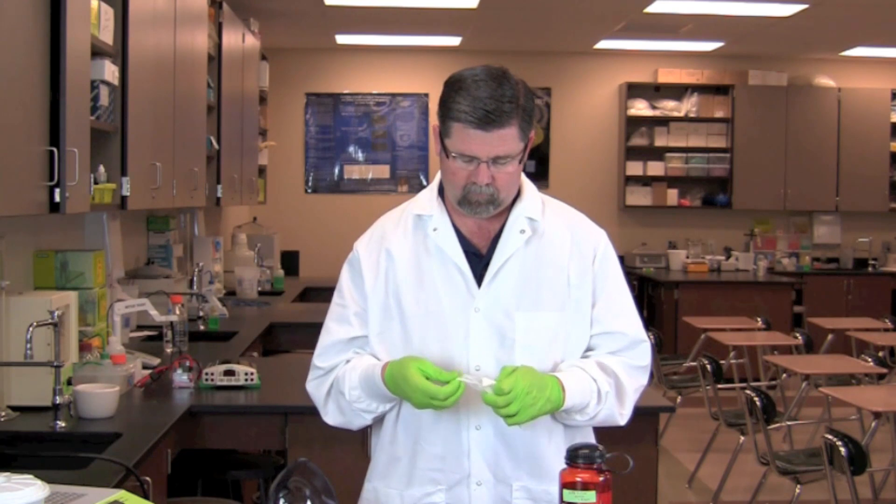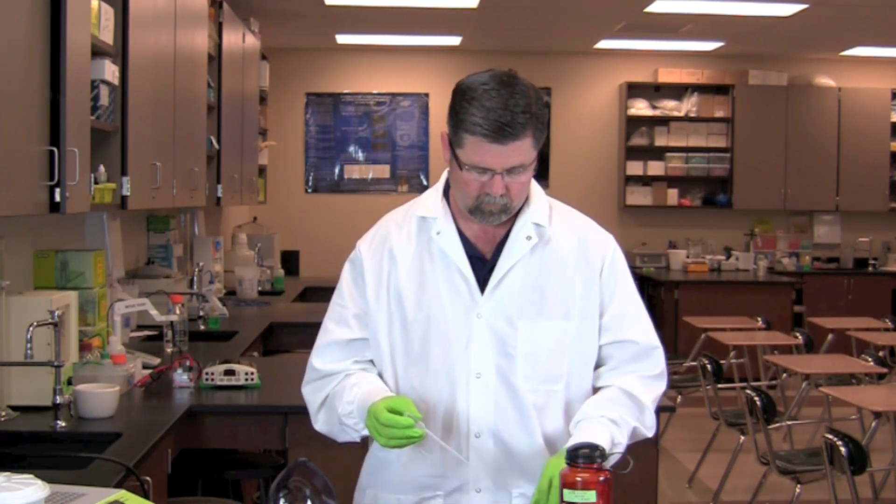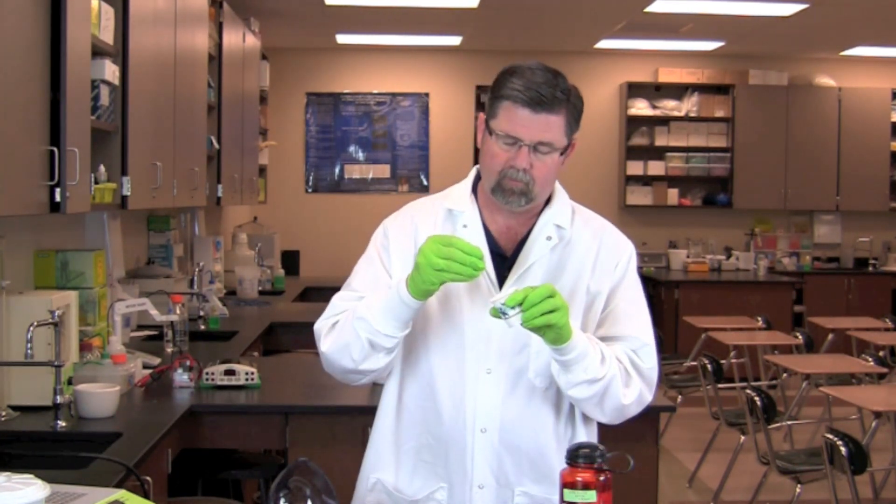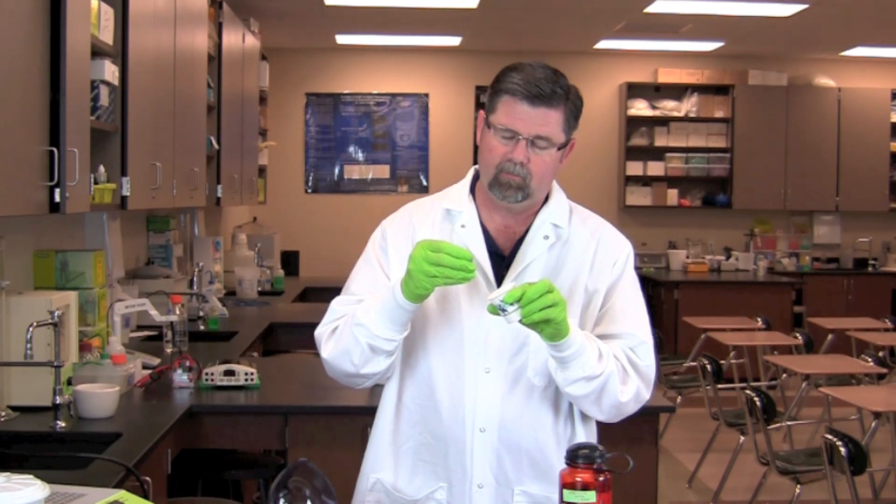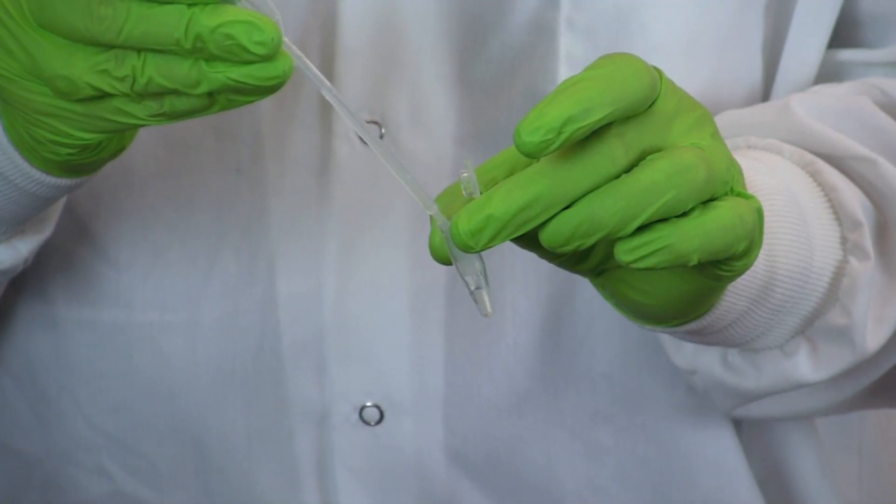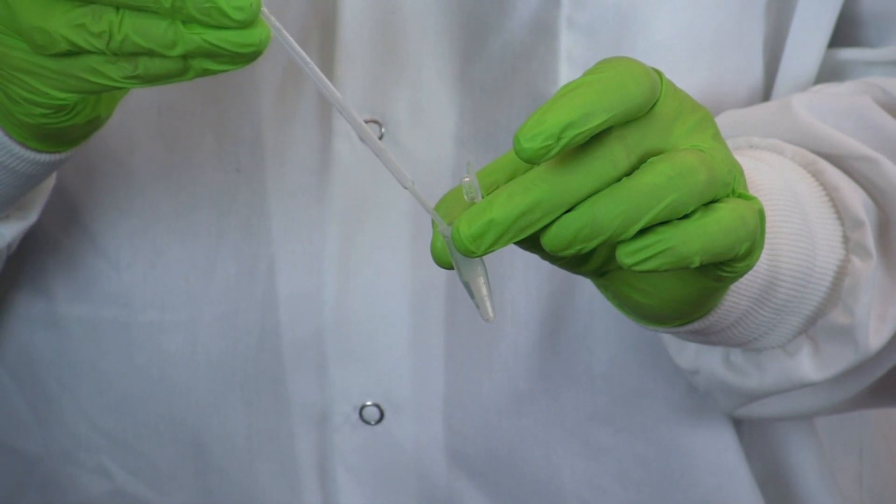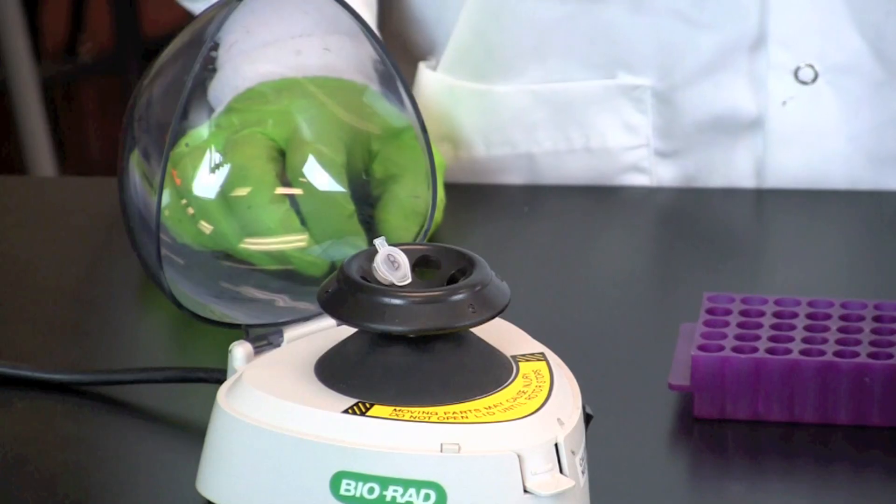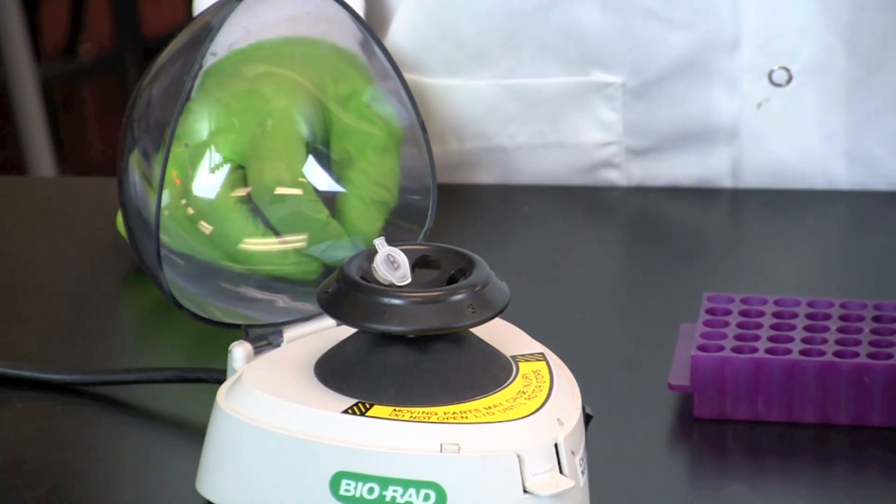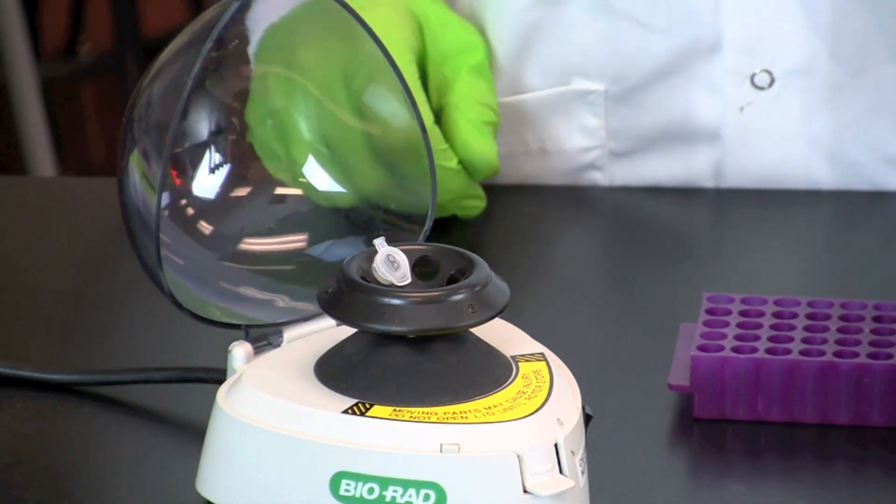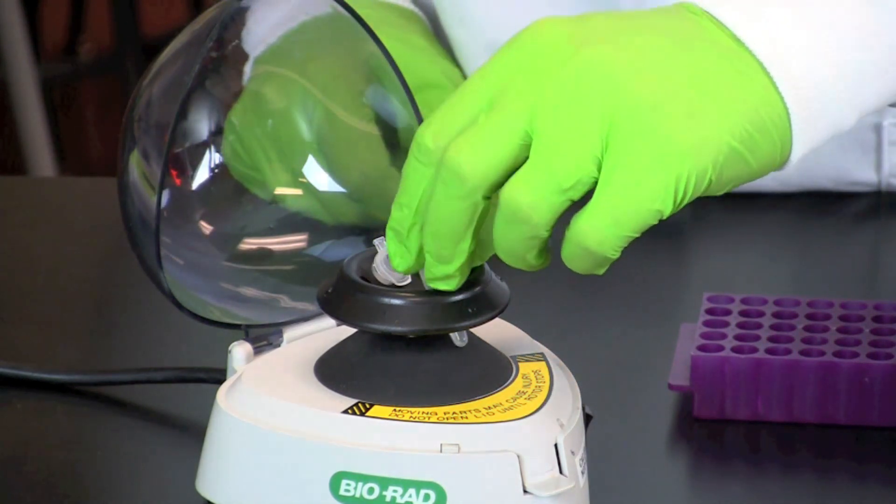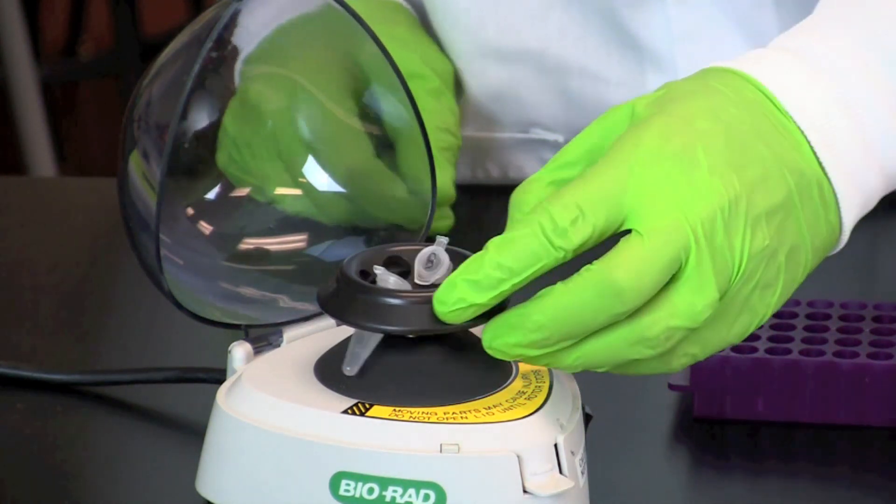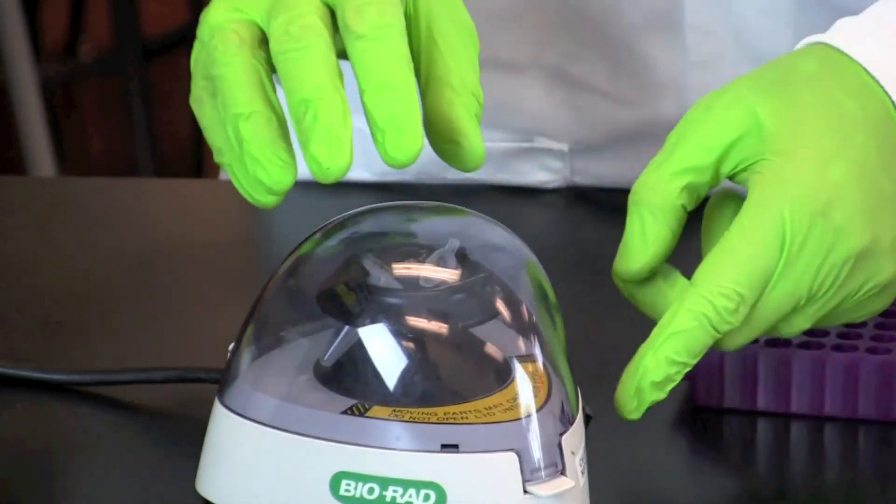Pipet 1 milliliter of mouth rinse into a 1.5 milliliter flip top microcentrifuge tube. Place the tube into the microcentrifuge in a balanced configuration. Place the hinges of the tubes facing outward so that the pellet will be easy to locate after spinning.